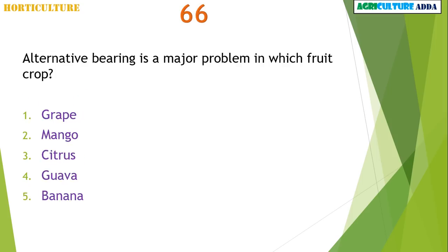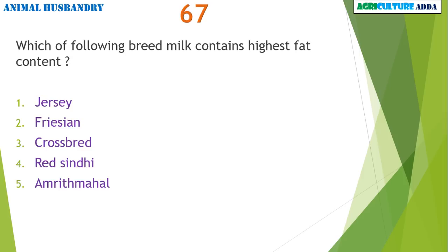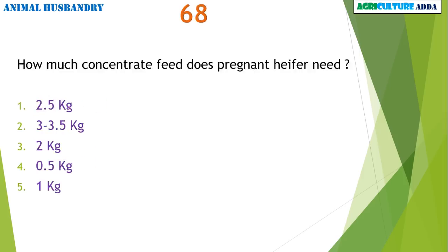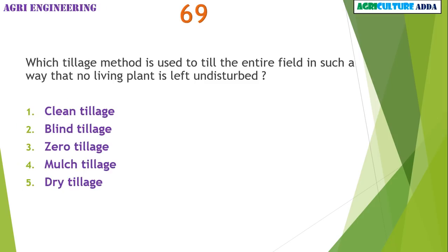Alternative bearing is a major problem in which fruit crop? Mango. How much concentrate feed does a pregnant heifer require? 3 to 3.5 kg.